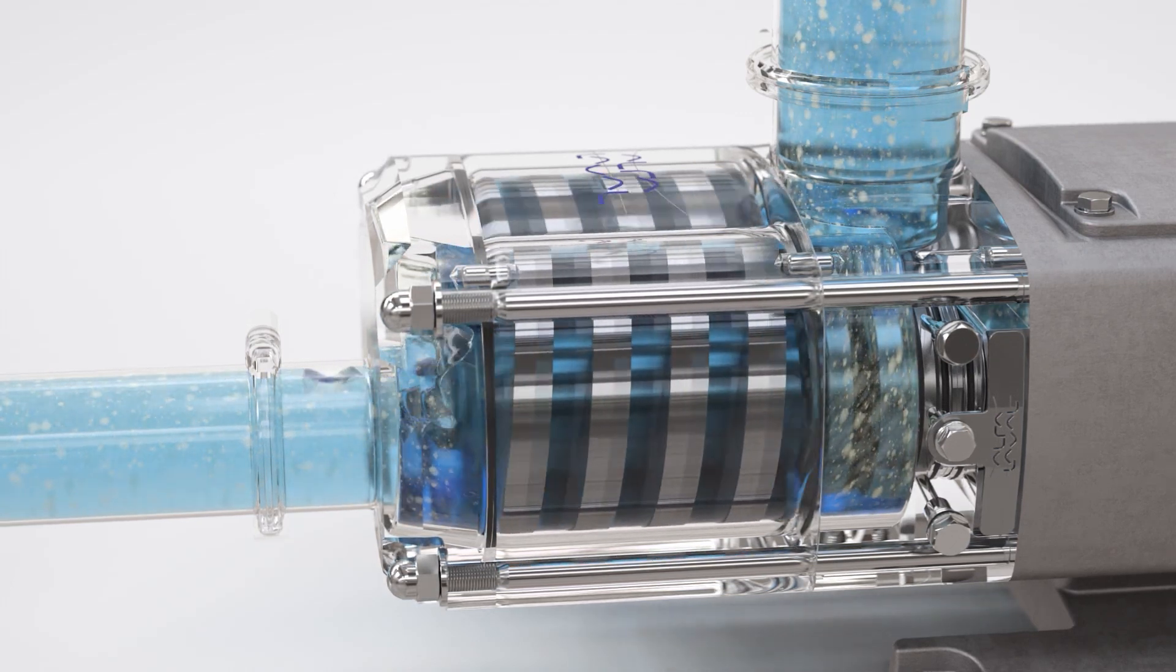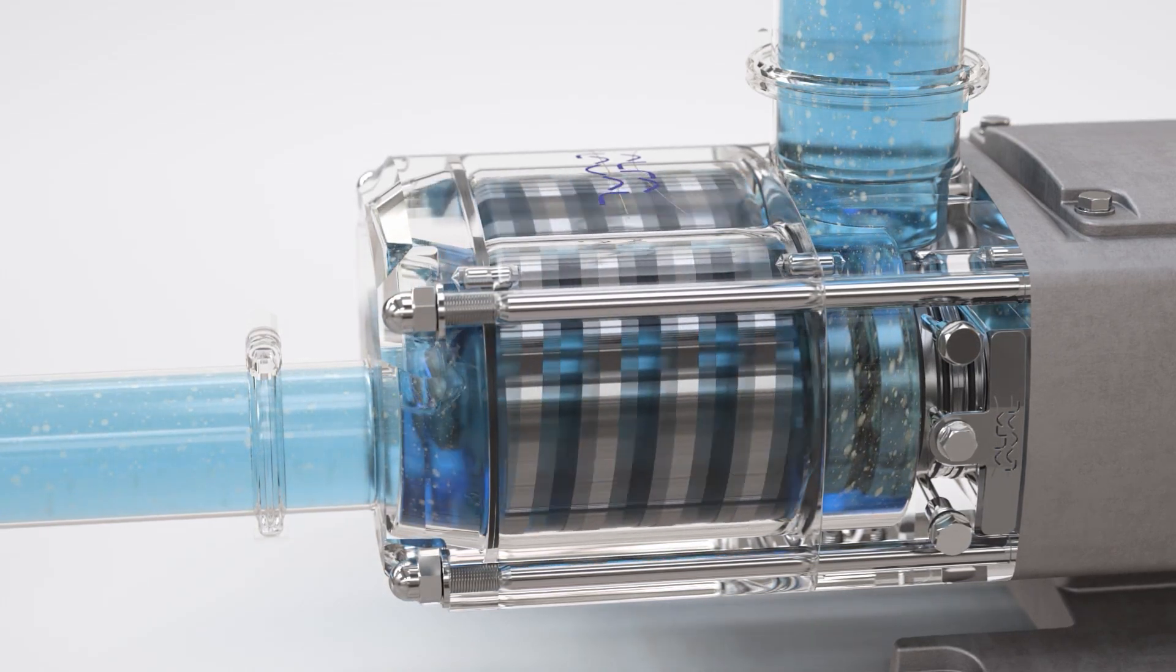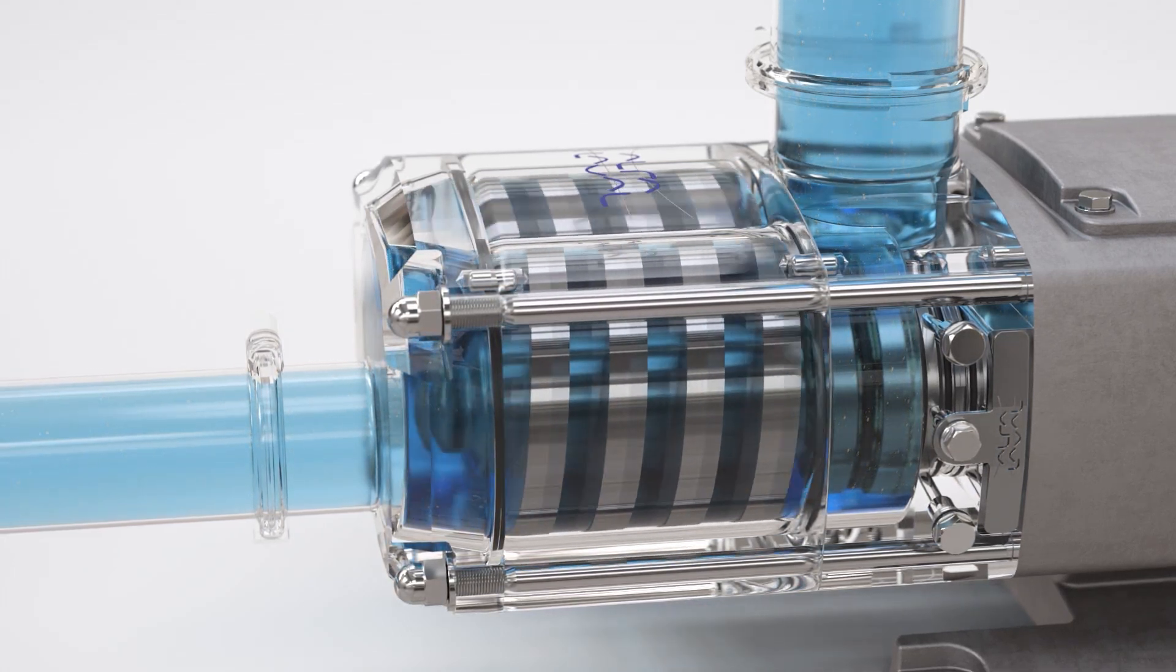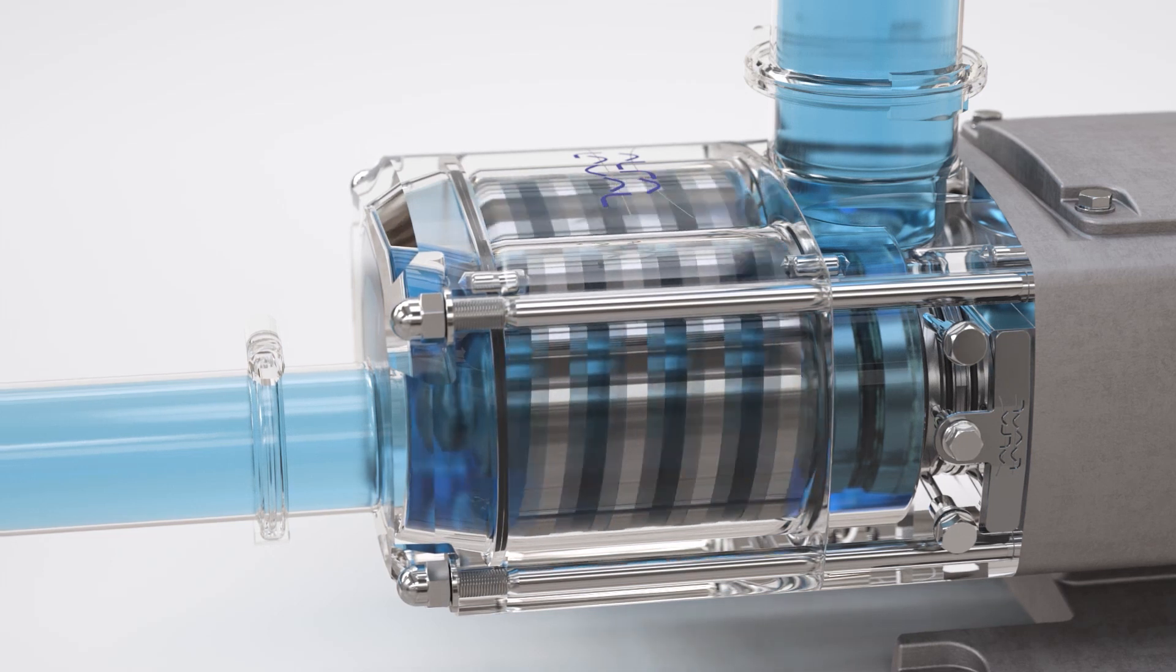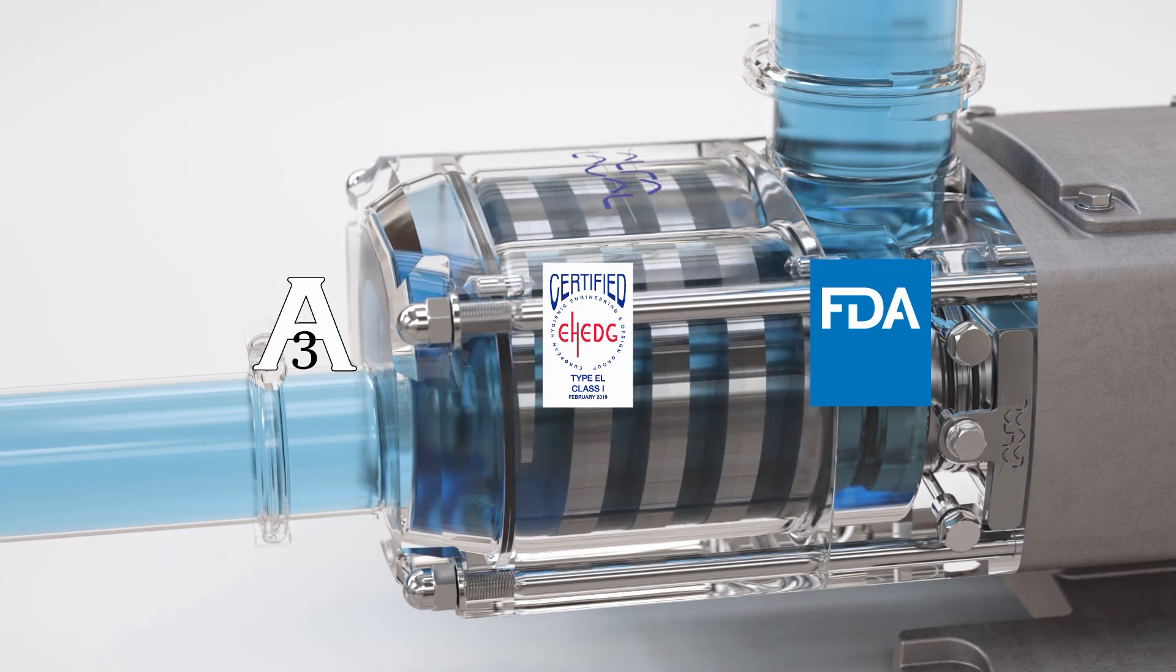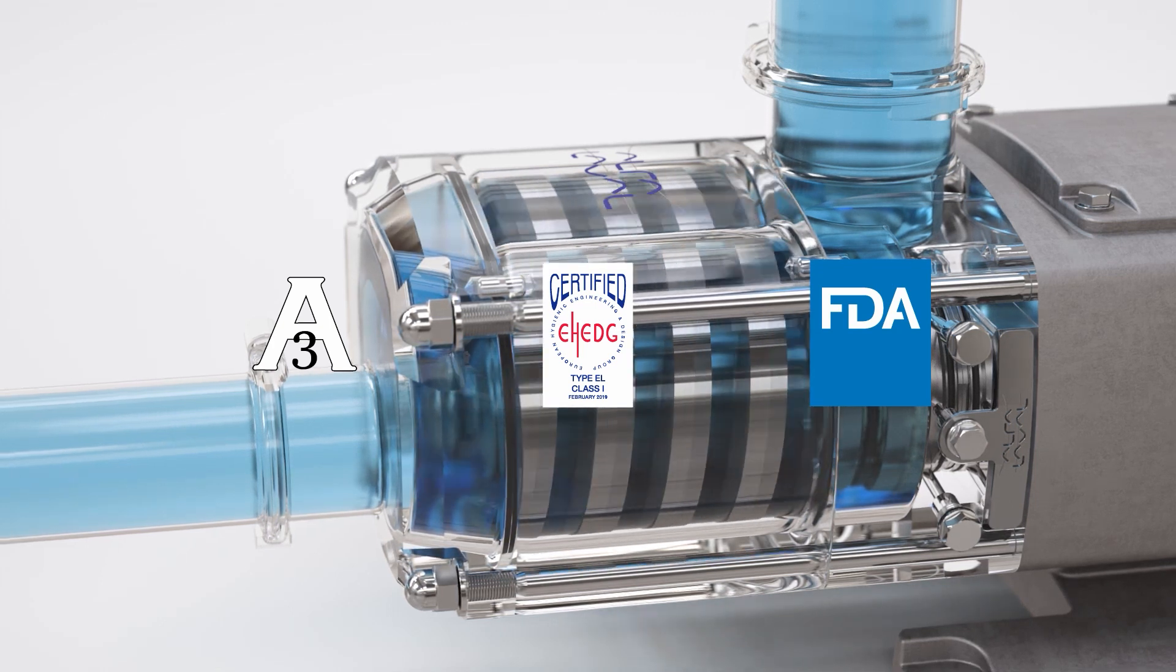The Alpha Laval twin screw pump is able to transfer liquids that contain a high percentage content of entrained air or gas. The optimized design carrying approvals including EHEDG, 3-A, and FDA reduces contamination risks and CIP cycle times, cutting cleaning and waste management costs.